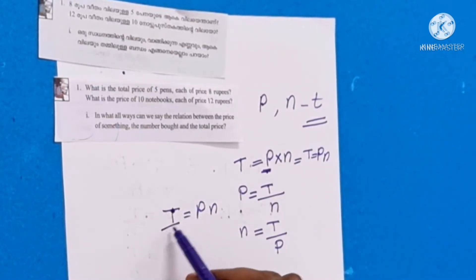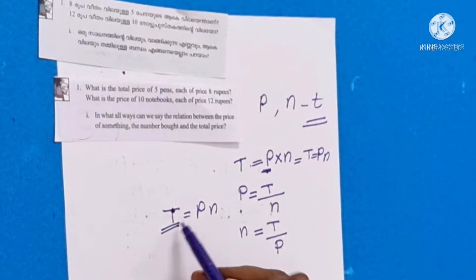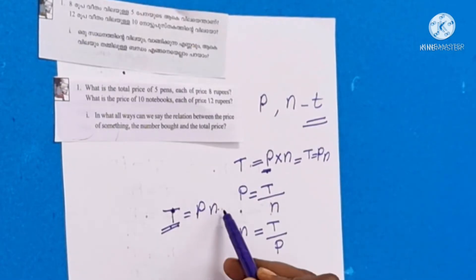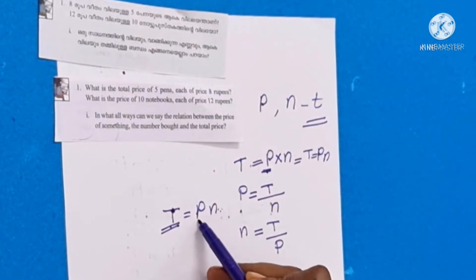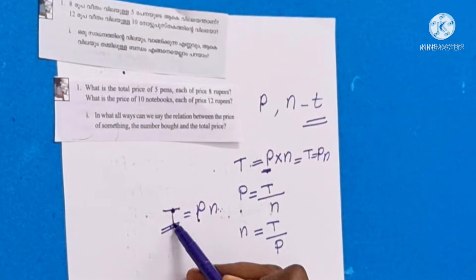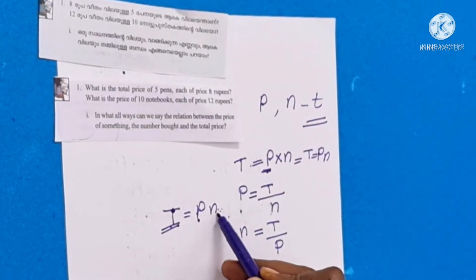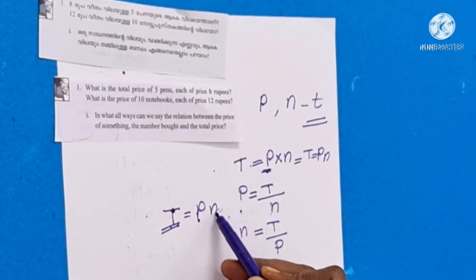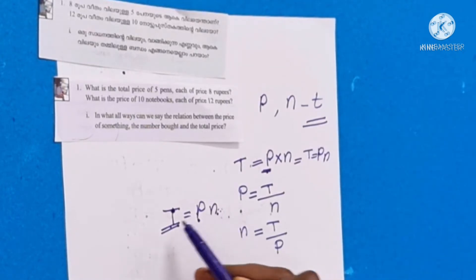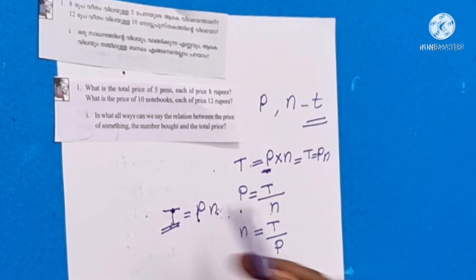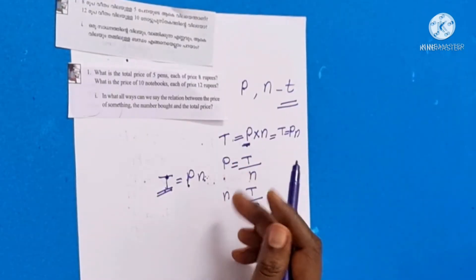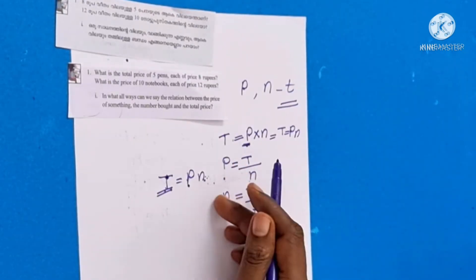t is equal to p multiplied by n. p is equal to t divided by n. n is equal to t divided by p.